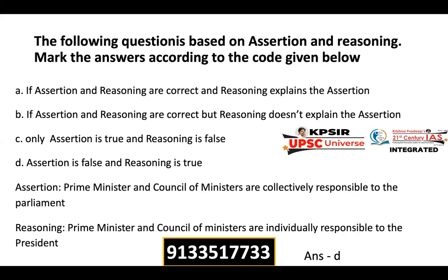Option C states: Only the assertion is true and reasoning is false. Option D: Assertion is false, reasoning is true. The assertion is incorrect because the Prime Minister and Council of Ministers are collectively responsible to the House of People, not to Parliament as a whole. The reasoning — that they are individually responsible to the President — is correct. So the answer is D.